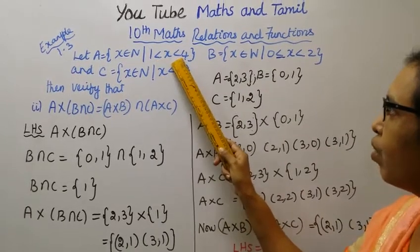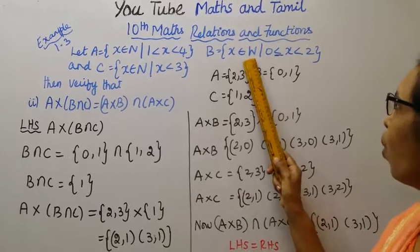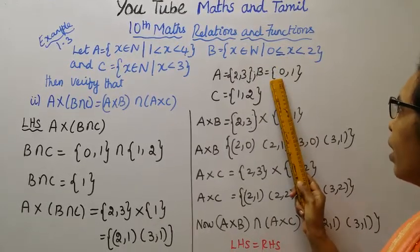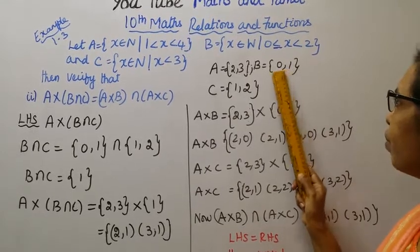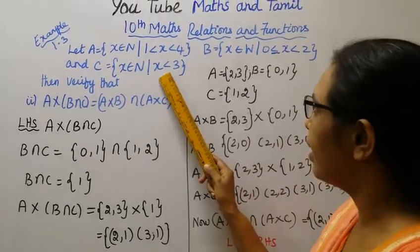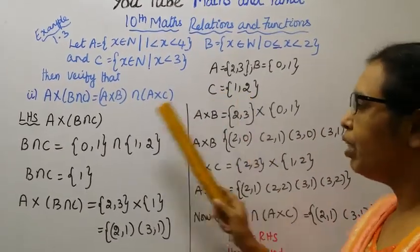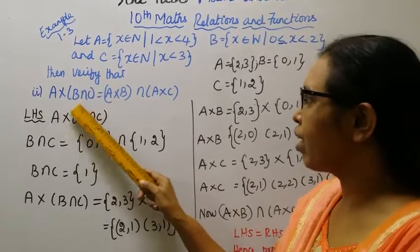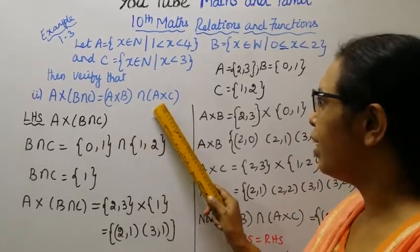X lies between 1 and 4 gives us 2, 3. For whole numbers 0 less than or equal to x less than 2 gives us 0, 1. For C, natural numbers less than 3 gives us 1, 2. Second subdivision: verify that A cross B intersection C equals A cross B intersection A cross C.